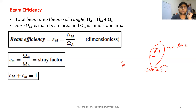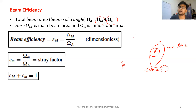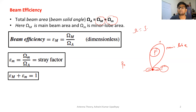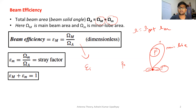One part is the beam area represented by the major lobe, and the other is the beam area represented by the minor lobe. The total beam area consists of both these beam areas. So the total beam area equals beam area by major lobe plus beam area by minor lobe. Beam efficiency is defined as the ratio of beam area in the major lobe divided by total beam area: E_M = Ω_M / (Ω_M + Ω_m).